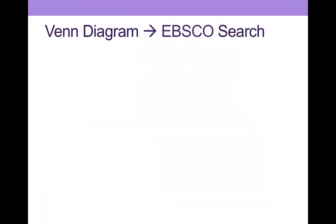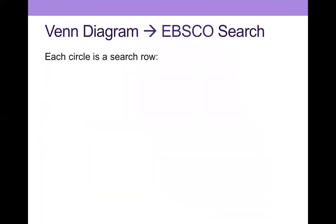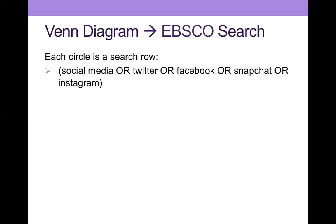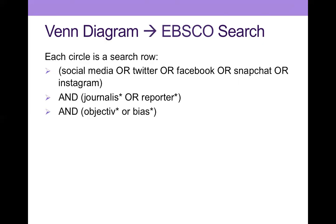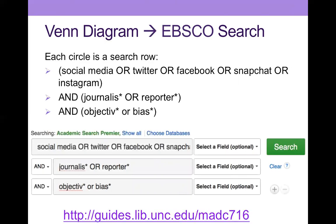It translates to the EBSCO search in that each of the circles or petals in the Venn diagram turns into a search row. So: social media or Twitter or Facebook or Snapchat or Instagram, and journalist or reporter, and objective or bias. This is how it actually looks in the search. And just as a reminder, here's the URL to get to EBSCO for yourself.